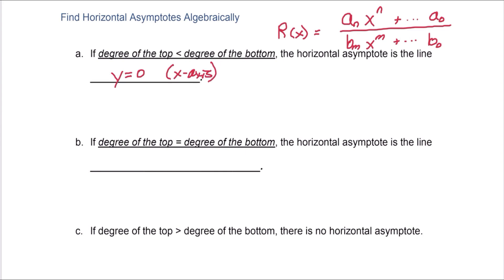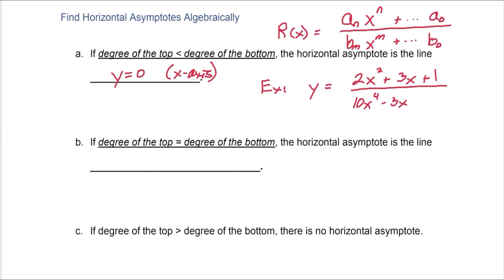For example, consider y equals 2x squared plus 3x plus 1 divided by 10x to the 4th minus 3x plus 8. All we care about is the degree of the top versus the degree of the bottom. Notice that 2 is less than 4. If the degree of the top is smaller, the horizontal asymptote is automatically y equals 0.